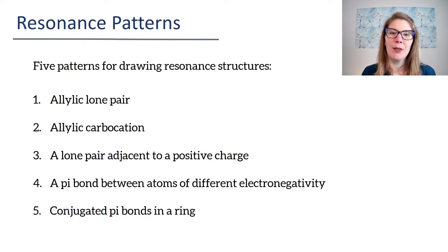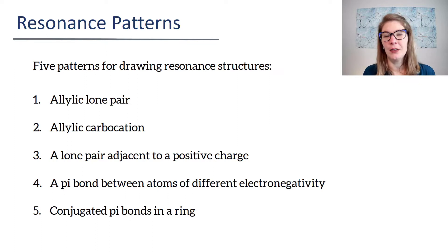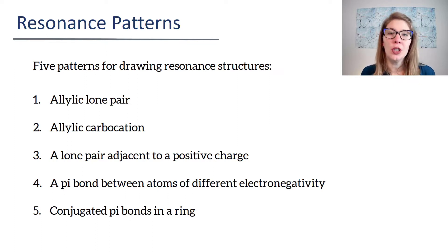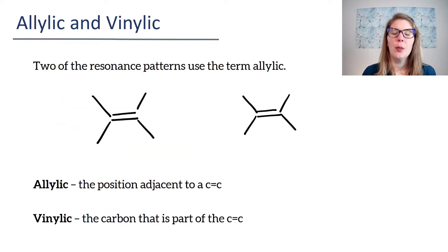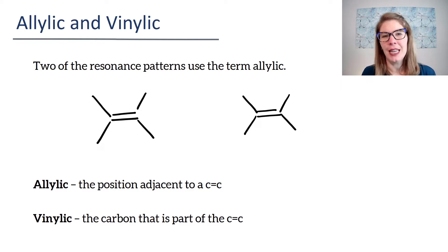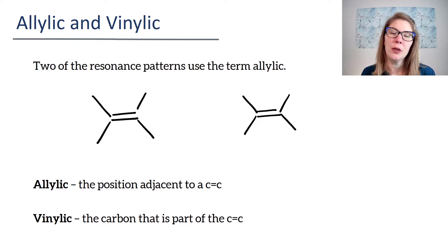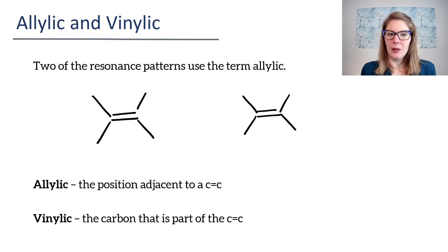Here are our five resonance patterns. These five resonance patterns are all different from one another and require a different set of arrows. We're going to look at each pattern individually. But before we do, we have to put in some vocabulary, because two of the resonance patterns said 'allylic' in them. But what does allylic mean?